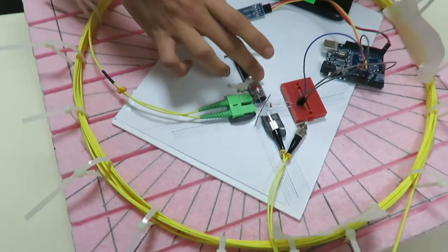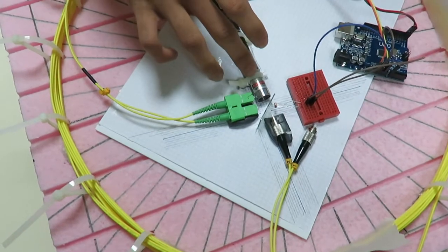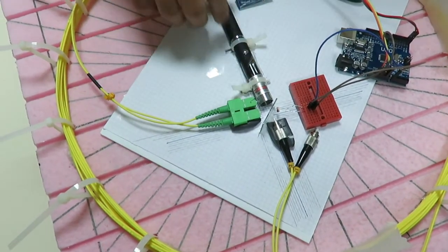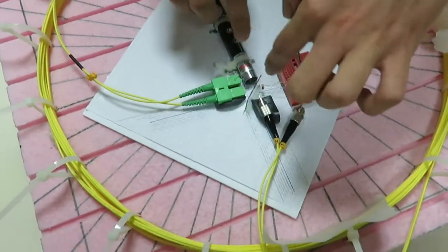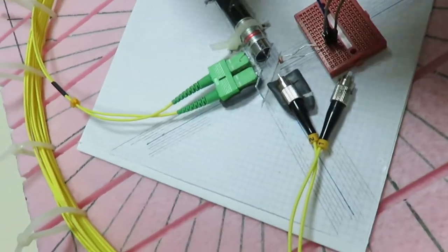As you can see, this is the laser, the light source that we use. This is a green laser, and when I turn it on, this beam splitter splits the beam into two halves.